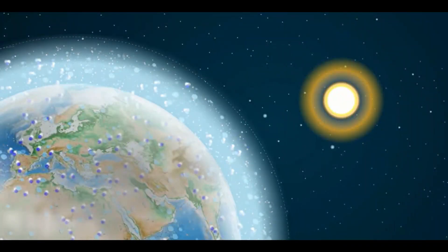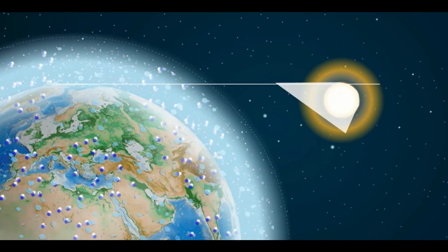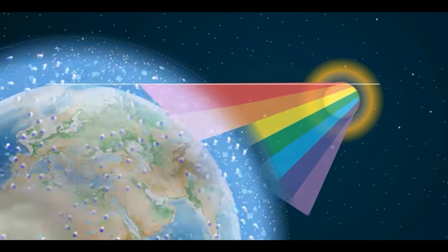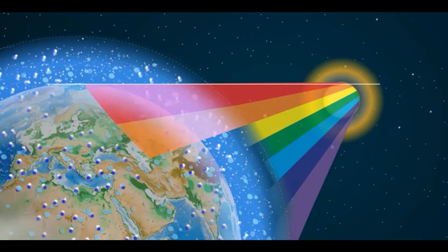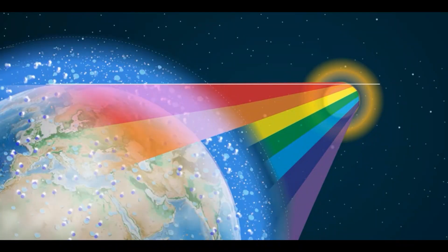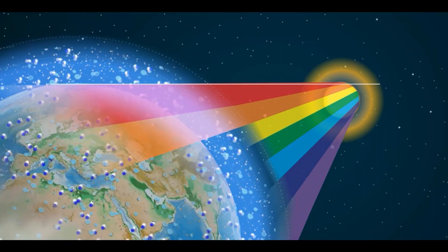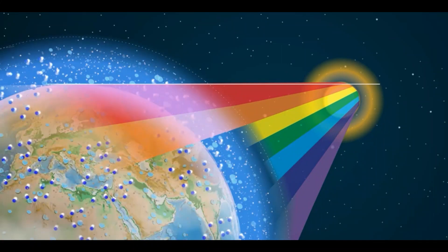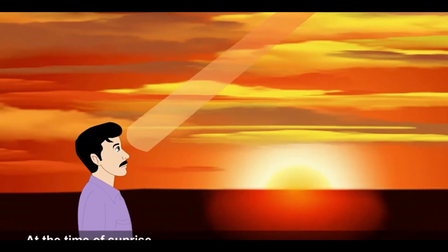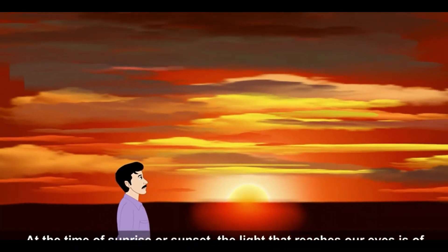At the time of sunrise or sunset, the sun is near the horizon. The light from the sun passes through a large distance in the Earth's atmosphere before reaching our eyes. While traveling through this large distance, the blue light scatters away in all directions before reaching us. Thus at sunrise or sunset, the light that reaches our eyes is of longer wavelength — that is, red — and the sun appears red in color.